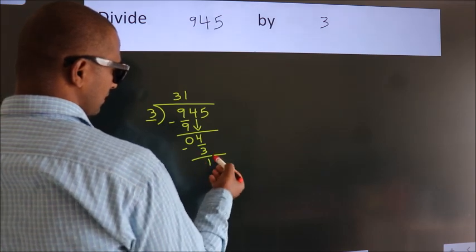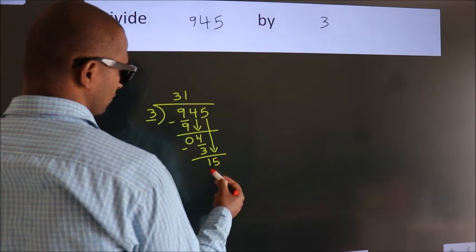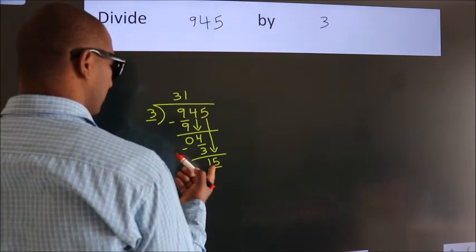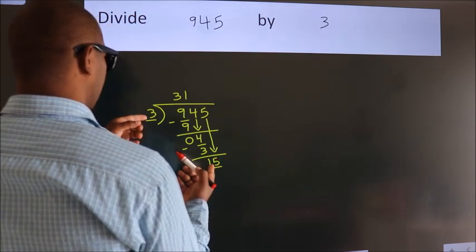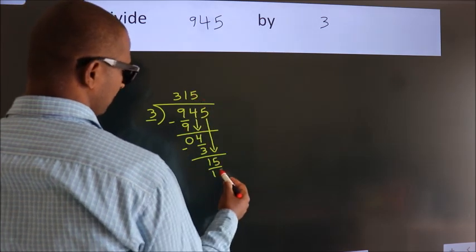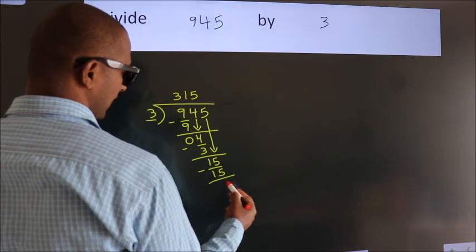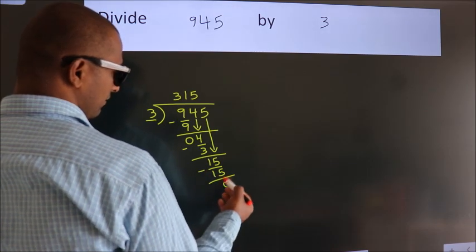After this, bring down the beside number. So 5 down. So 15. When do we get 15 in the 3 table? 3 times 5 equals 15. Now we subtract. We get 0. After this,